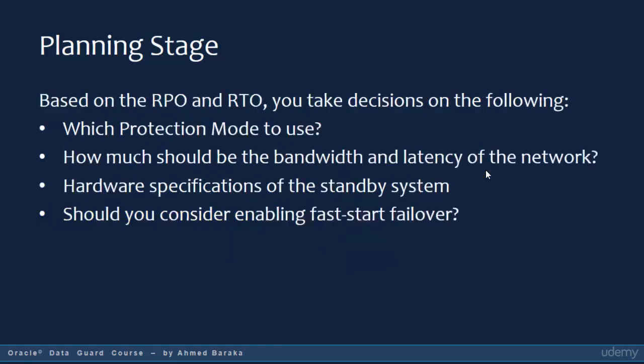Based on the RPO and RTO, you make decisions on the following: which protection mode to use, what the bandwidth and latency of the network should be, the hardware specification of the standby system — which ideally should be the same as the primary — and whether to enable Fast Start Failover. We will discuss Fast Start Failover in a separate lecture; it simply allows failover to happen automatically if the primary database goes down.